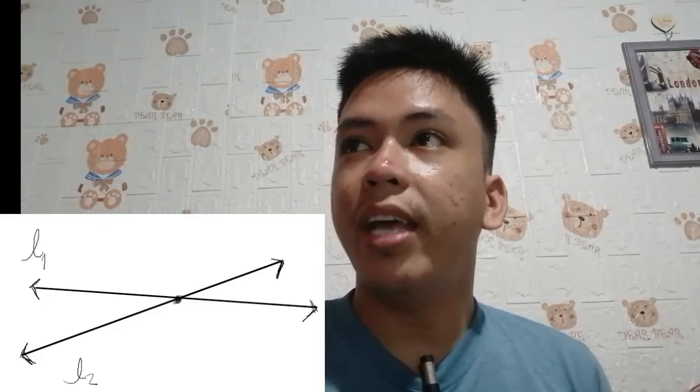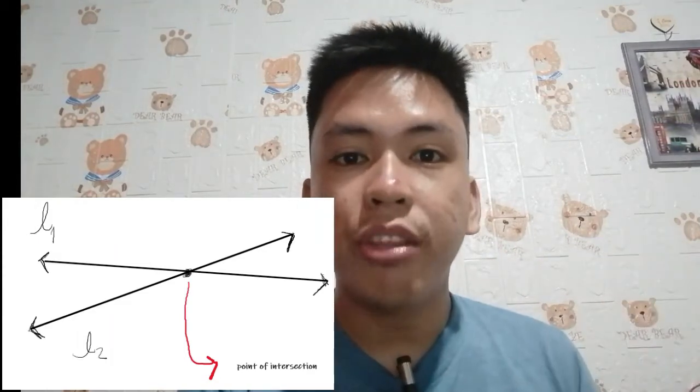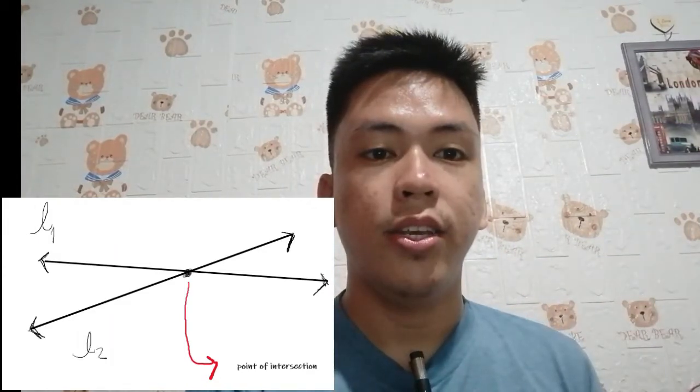Now suppose you have two lines and you extend them until they intersect at a certain point — those are intersecting lines. The point at which two lines intersect is the point of intersection. One special type of intersecting lines is perpendicular lines, where the lines intersect forming a square corner, which we call a right angle of 90 degrees.